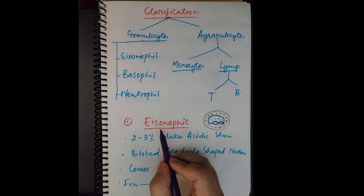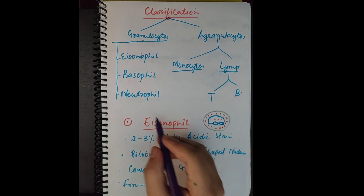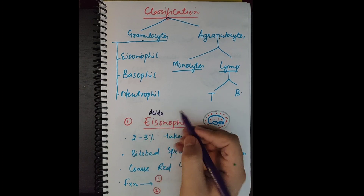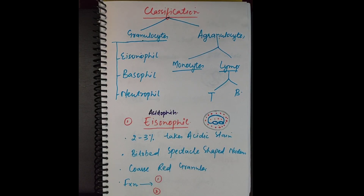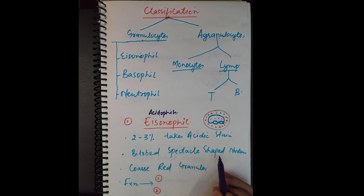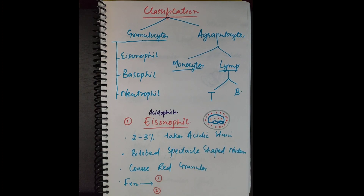Eosinophils are called eosinophils because they take up eosin stain, and eosin is an acidic stain, so another name for eosinophils is acidophils. They are two to three percent of the differential leukocyte count — out of a hundred WBCs, two to three will be eosinophils. Their nucleus is bilobed and spectacle-shaped, and they have coarse red granules — coarse meaning they are bigger granules.